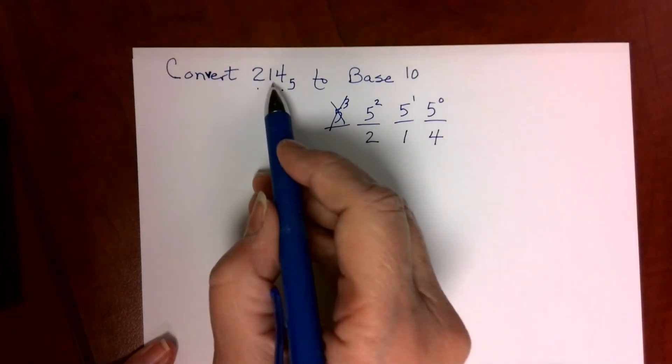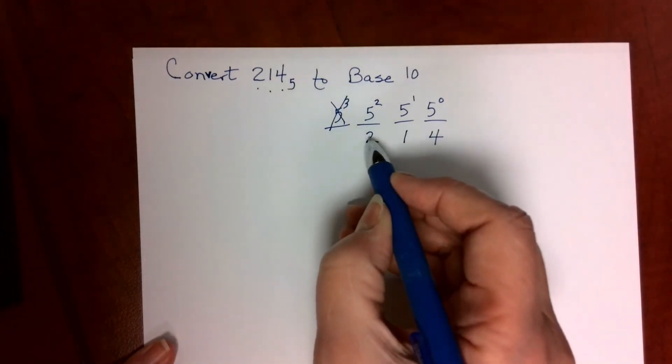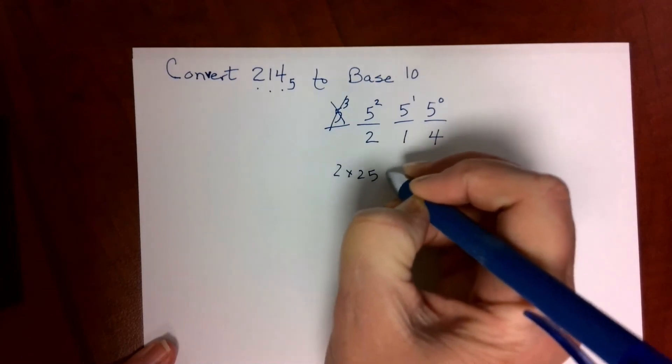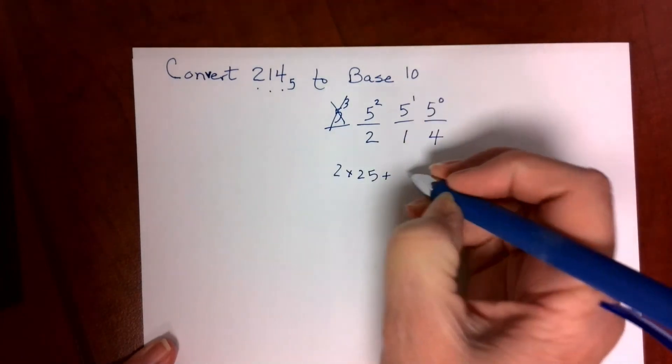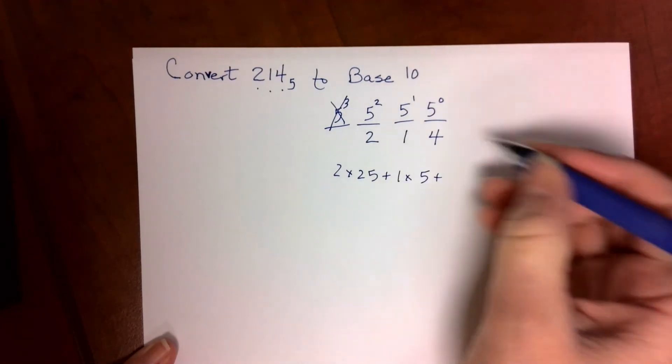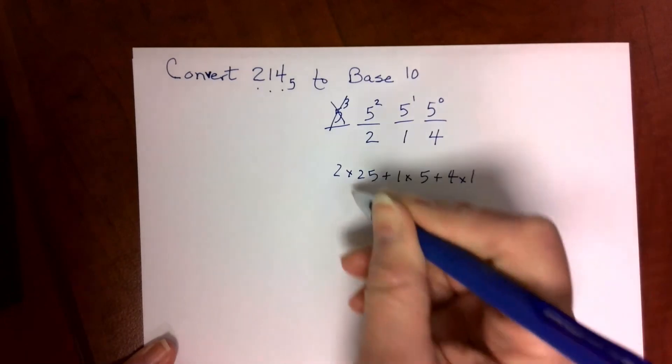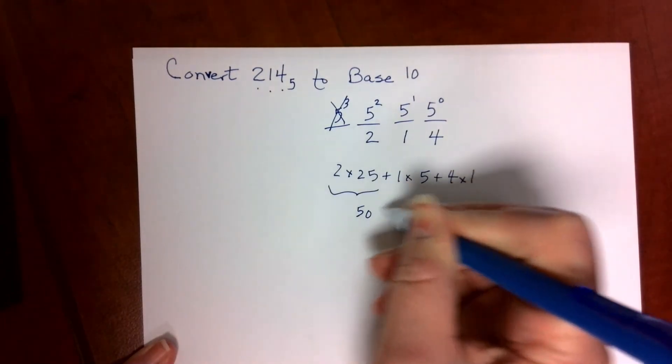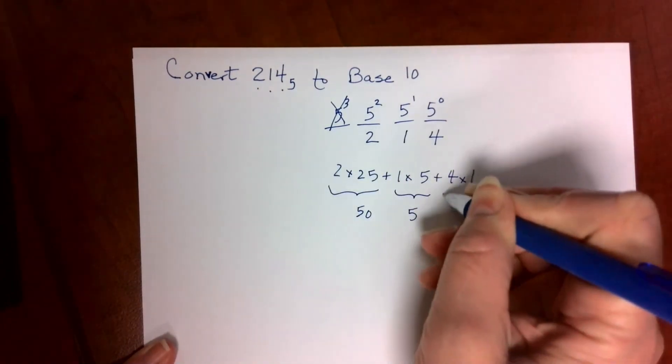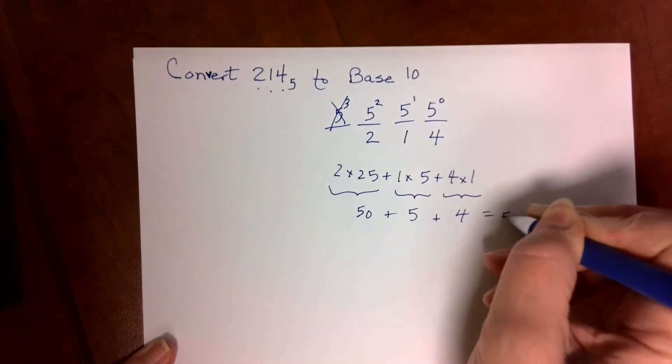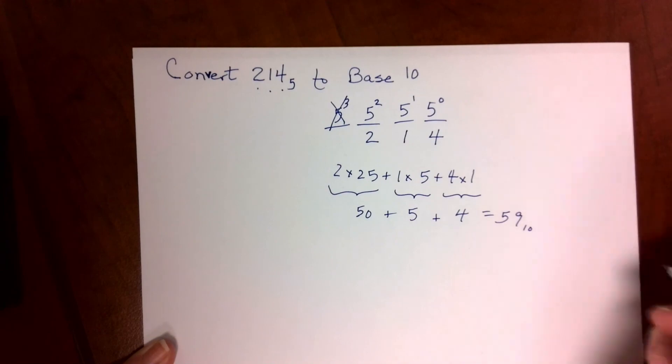214 base 5 means I have 2 in the 25s, 1 in the 5 column, and 4 in the 1s column. That means I have 50 plus 5 plus 4. That's 59 base 10.